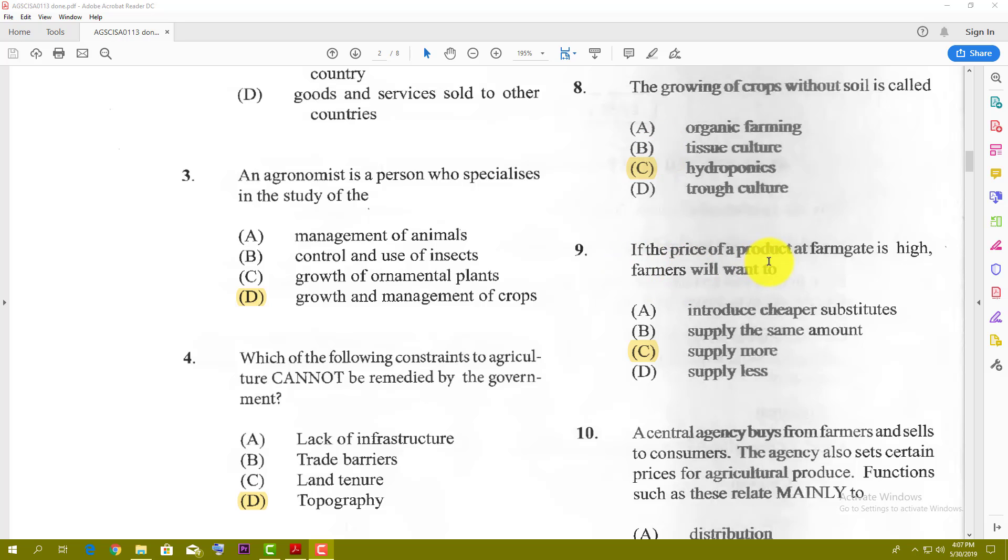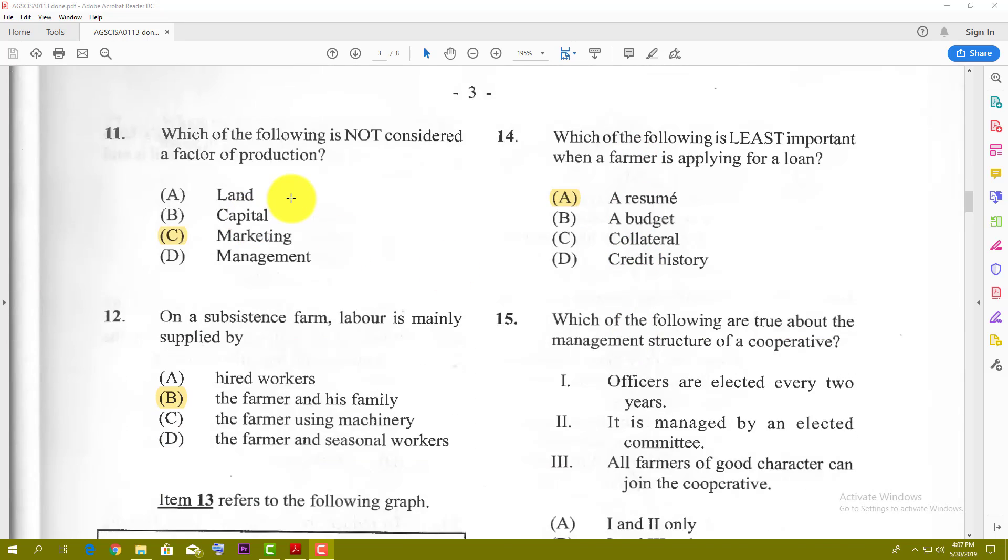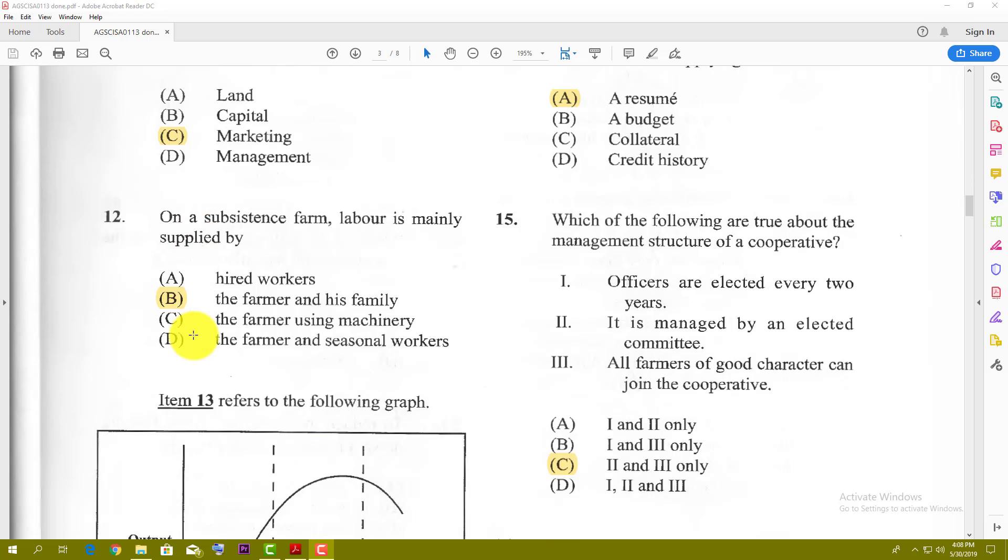Number nine: if the price of a product at farm gate is high, farmers will want to supply more. When the price is high, supply and demand adjust to the price, so you supply more to maximize profit. A central agency buys from farmers and sells to customers. The agency also sets certain prices for agriculture produce. Functions such as these relate mainly to marketing. You might think it's distributing because it's buying and selling, but when you look at setting prices, that's part of marketing.